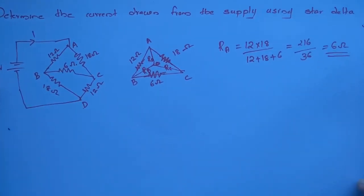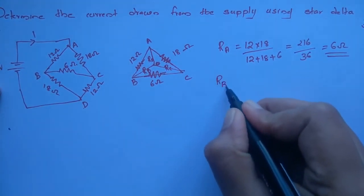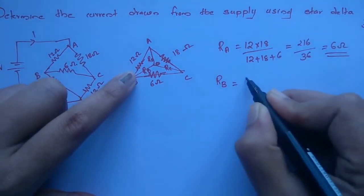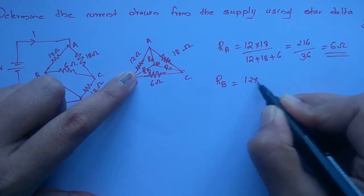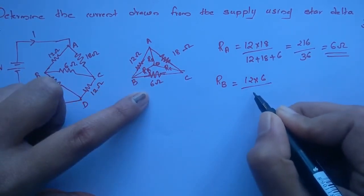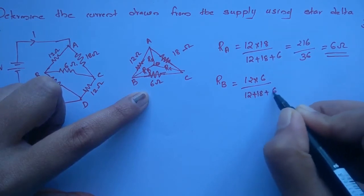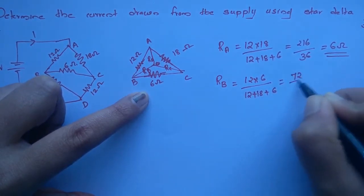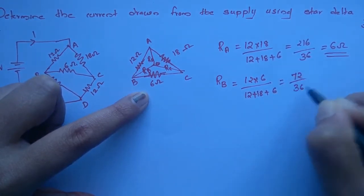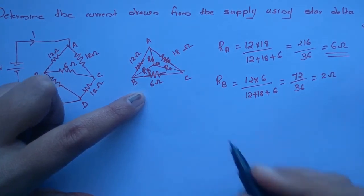Similarly, Rb: product of adjacent sides is 12 into 6, that is 72. Divided by 12 plus 18 plus 6, that is 72 divided by 36, which equals 2 ohm.